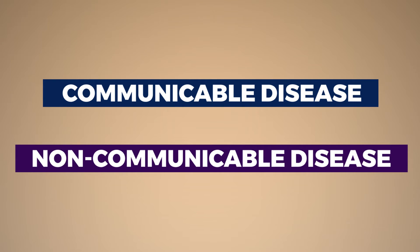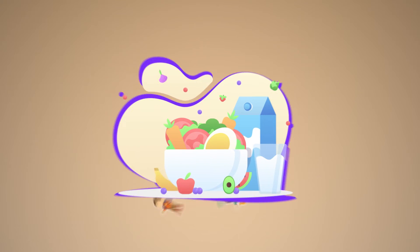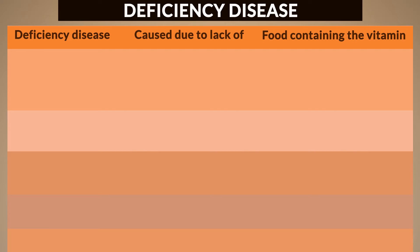Now let's study about these two. Number one: non-communicable diseases. These diseases do not spread from one person to another. These diseases can be caused due to deficiency of a particular food. Now let's learn about some non-communicable diseases. Look at the table given below. This table tells us about the deficiency disease, its causes, and the lack of food components — especially vitamins and minerals.